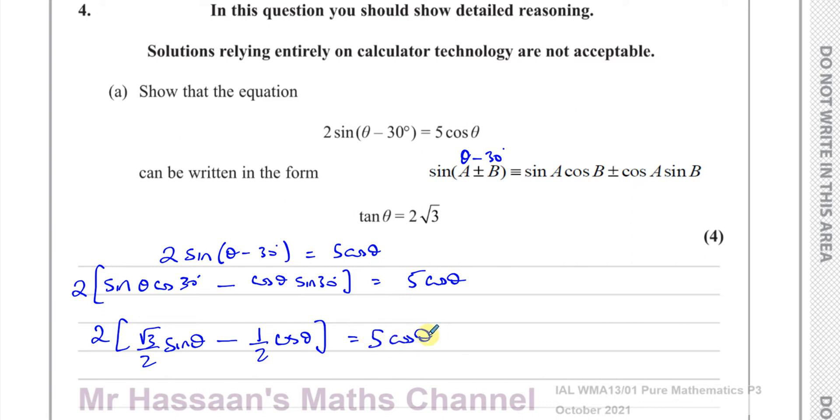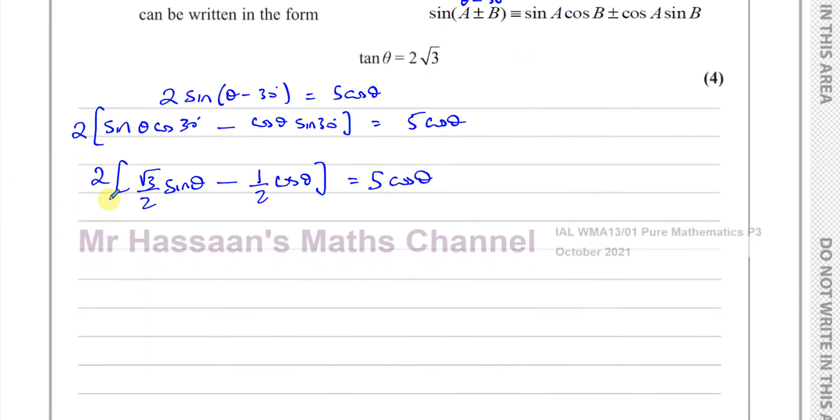Now we can multiply by two both these terms, expand this bracket. Basically, the twos here will cancel out, so you'll be left with √3·sinθ minus cosθ equals 5cosθ.